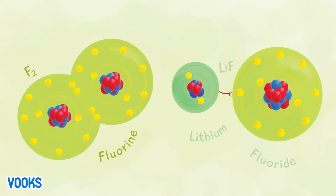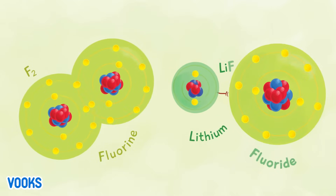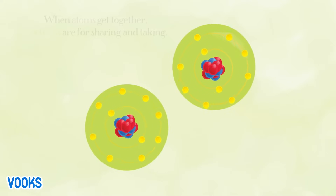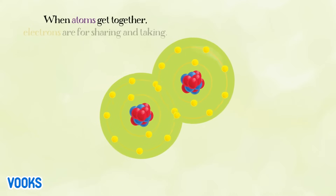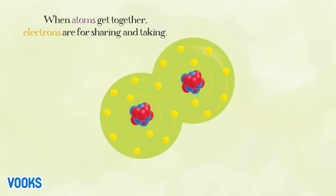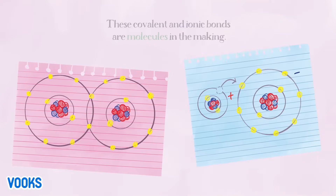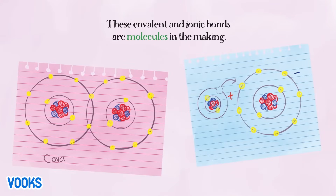Fluorine, lithium, fluoride. When atoms get together, electrons are for sharing and taking. These covalent and ionic bonds are molecules in the making. Covalent bond, ionic bond.